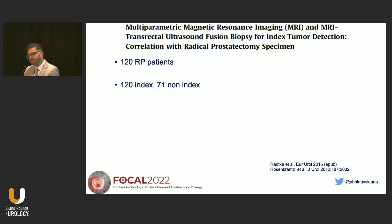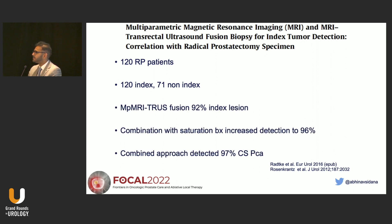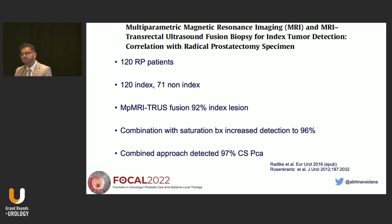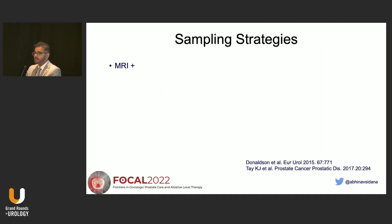Dr. Taneja's work mentioned that MRI is great at detecting the index lesion — not perfect, but great. MRI alone with targeted biopsy detects the index lesion in 90% of cases. Combined with a saturation biopsy of 28 cores, detection increases to 96%. So there is a very small proportion of men who would not have proper diagnosis of the index lesion when you combine MRI with a good quality systematic biopsy.